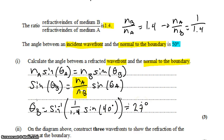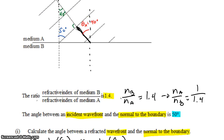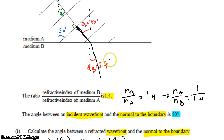However, 27 degrees is still not the final answer, because we were asked for the angle between the refracted wavefront and the normal to the boundary — not what Snell's Law directly gives us. We found that the ray bends inward from 40 degrees down to 27 degrees. But we need the angle between the normal to the boundary and the wavefront, not the ray.